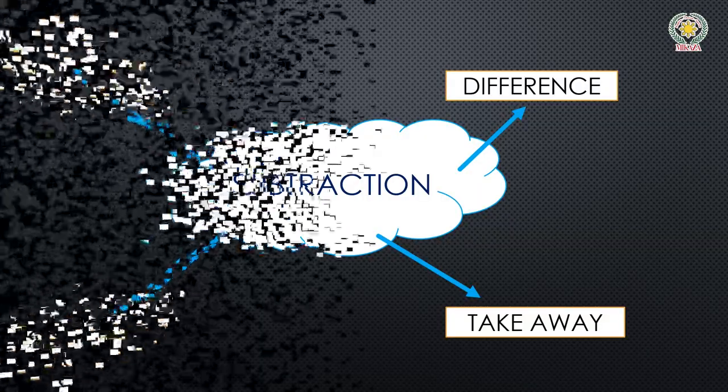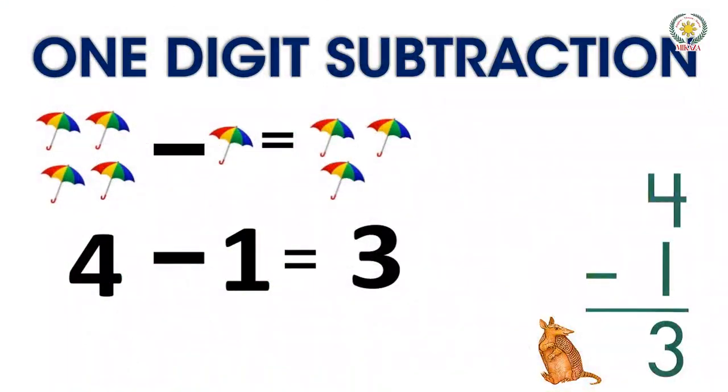One-digit subtraction: four minus one. We have four umbrellas. Here in the picture we have 4 umbrellas, we minus 1 umbrella. So we have how many umbrellas? Three umbrellas. Four minus one equals three.